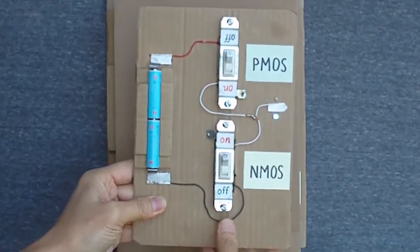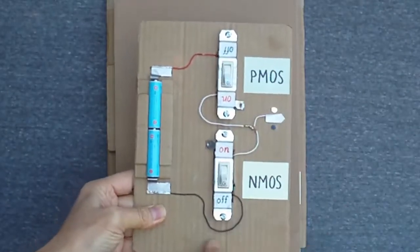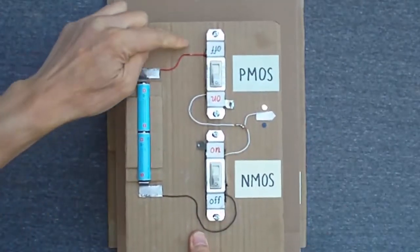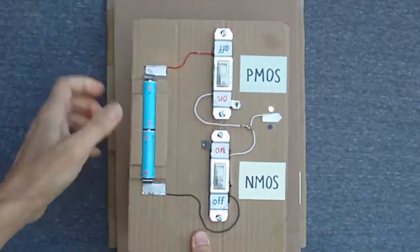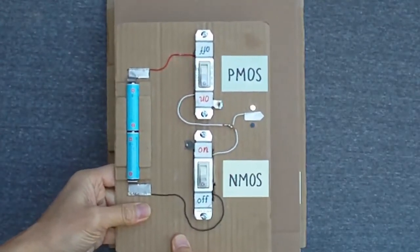When I apply a low voltage to the PMOS gate, the PMOS source and drain are connected, and the positive battery voltage reaches the PMOS drain, as indicated by the white light.